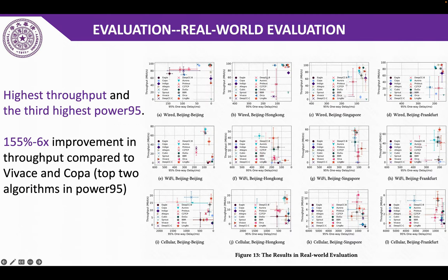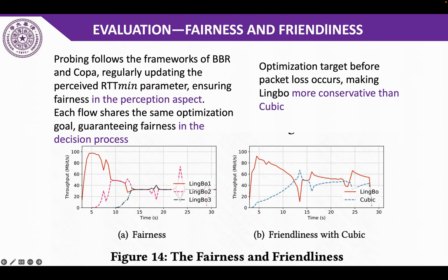To test the performance of Limbo in real-world conditions, we deployed it on servers globally. Limbo achieved the highest throughput and the third highest P95 latency score. Limbo also showed excellent fairness and TCP-friendliness.